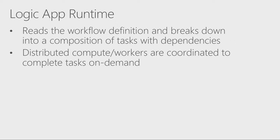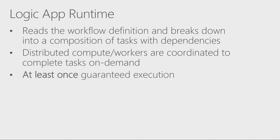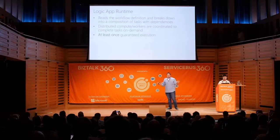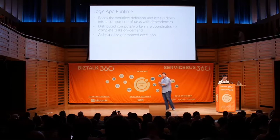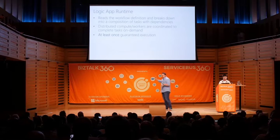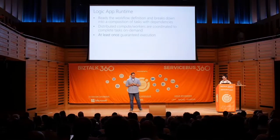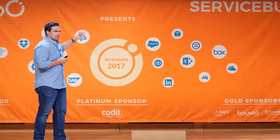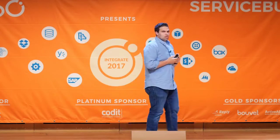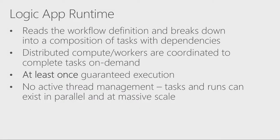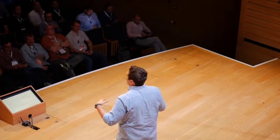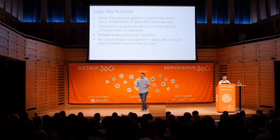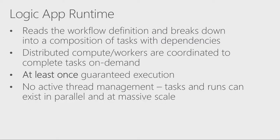That distributed nature is very important because it explains some of the behaviors of how your Logic App executes, including at-least-once guaranteed execution. When using a distributed model and assigning different workers to accomplish different tasks across an entire scale set of virtual machines and compute clusters, we can't guarantee we will only ever do an action once and only once. In the vast majority of the time that's what happens, but you do have at-least-once guaranteed execution, not only-once. There is no active thread management. Since this is distributed, you can have tasks and runs that are running in parallel at massive scale, because we'll just spin up workers across the entire cloud.